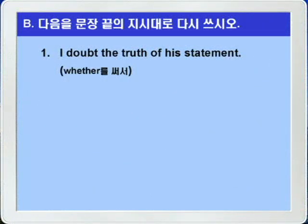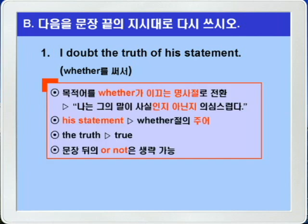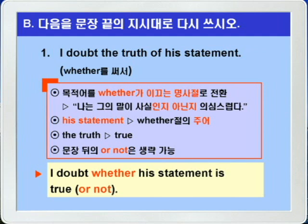이제 B번 문제를 풀 차례입니다. B번은 문장 끝에 지시한 대로 문장을 바꿔 쓰는 문장 전환 문제가 되겠습니다. B 1번입니다. I doubt the truth of his statement. statement는 '말, 진술'이라는 뜻입니다. whether를 써서 바꾸라고 했으니, his statement를 주어로 하고 the truth를 true로 바꿔서 씁니다. 정답: I doubt whether his statement is true or not. (or not 생략 가능)